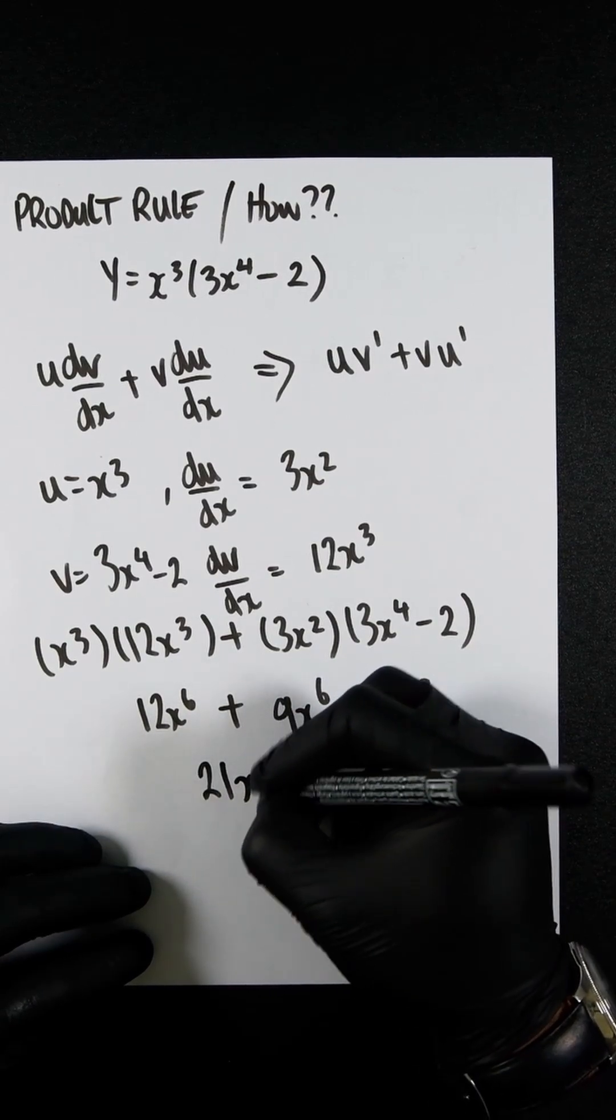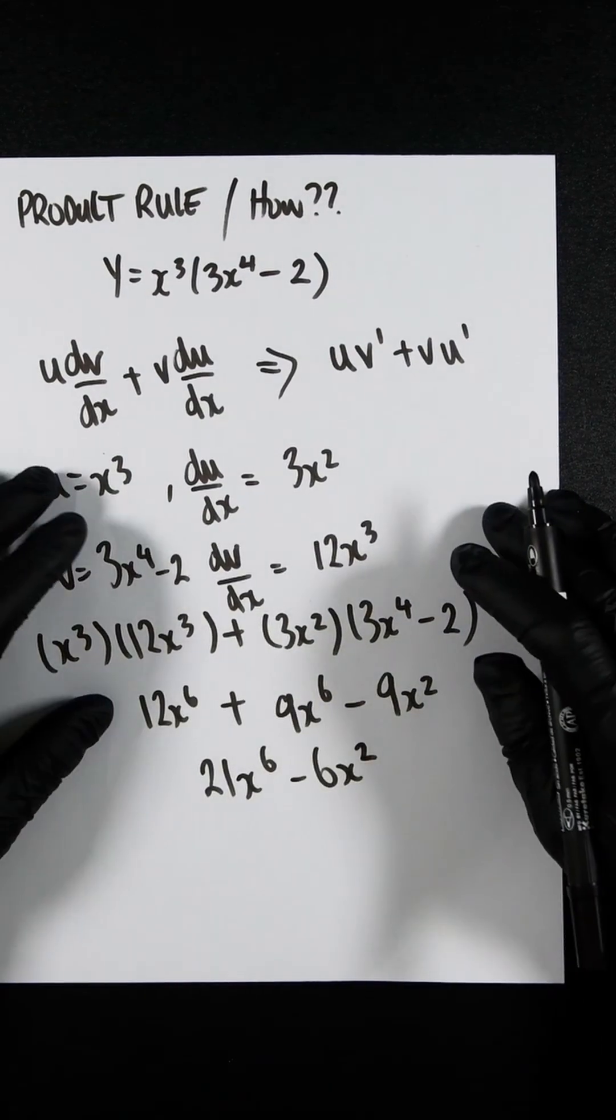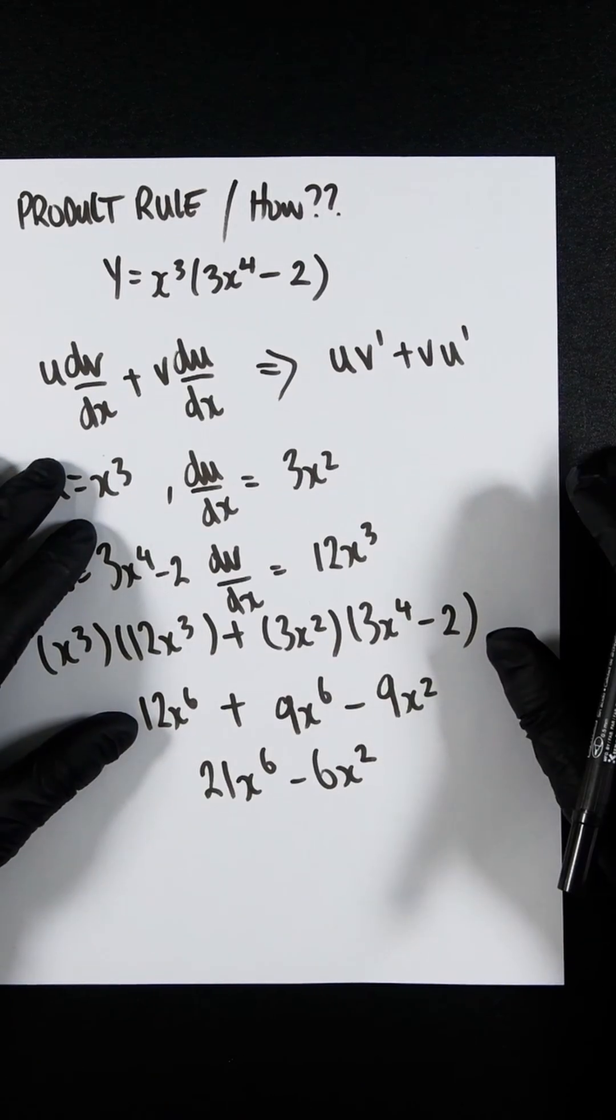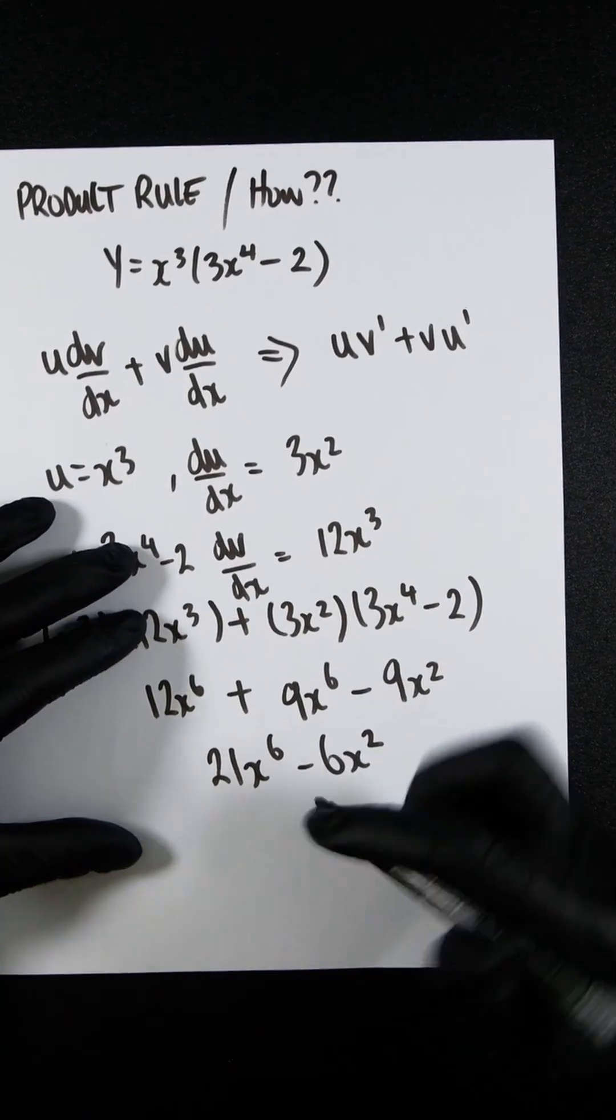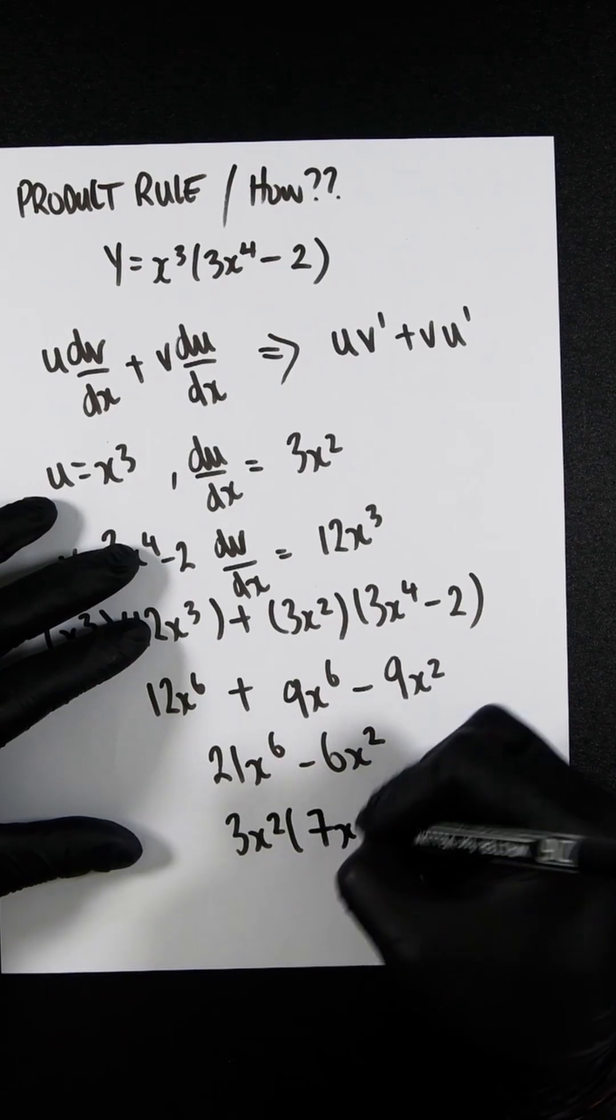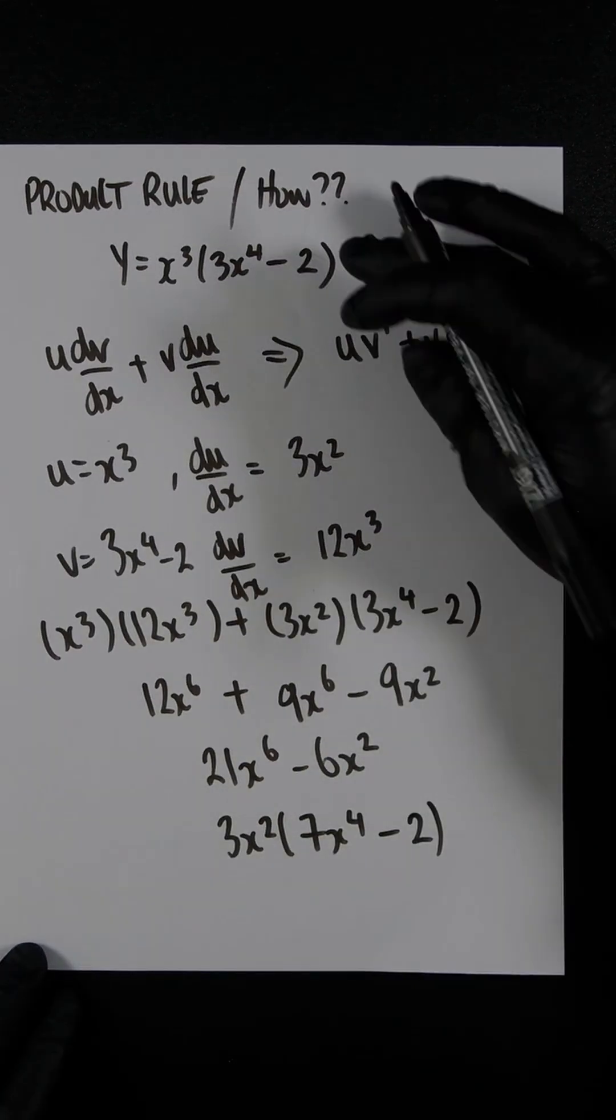leaving us with 21x6 minus 6x squared. If the question asks to factorize completely or represent in its simplest form, I'd recommend factorizing this. So that would be 3x squared, 7x4 minus 2. So that is the differential of this.